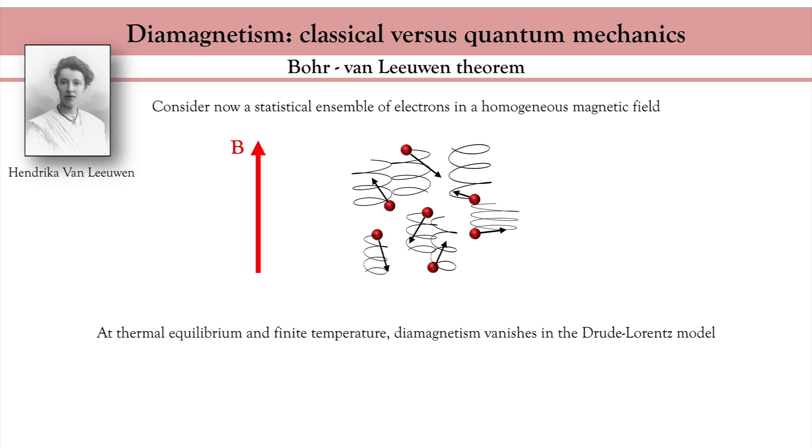In other words, you could say that the Lorentz force does not create any work, so no magnetic moment can emerge from this classical model. This is called Bohr-van Leeuwen theorem, and this is a cornerstone of the theory of magnetism. By demonstrating that no diamagnetism emerges in a classical ensemble of electrons, it suggests that the origin of diamagnetism is of purely quantum origin.